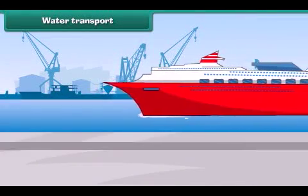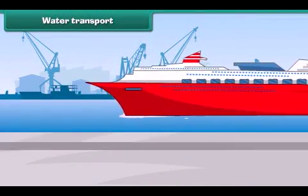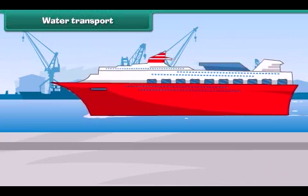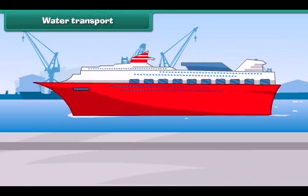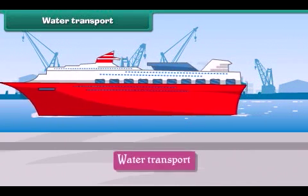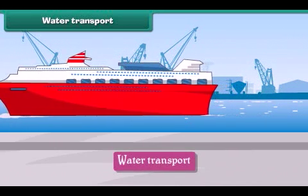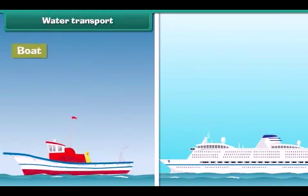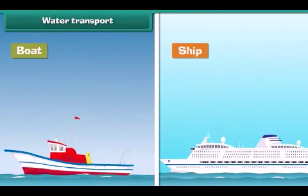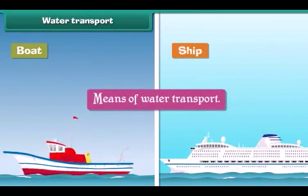Water transport: The movement of goods and passengers on water is called water transport. The vehicles that carry goods and passengers through waterways are called means of water transport. Boats and ships are the means of water transport.